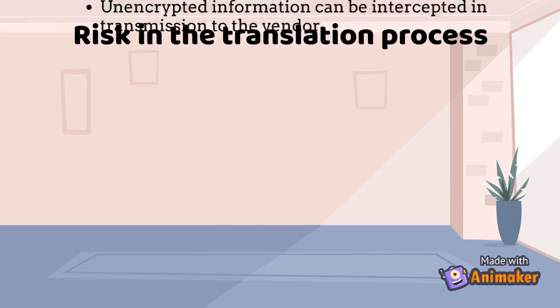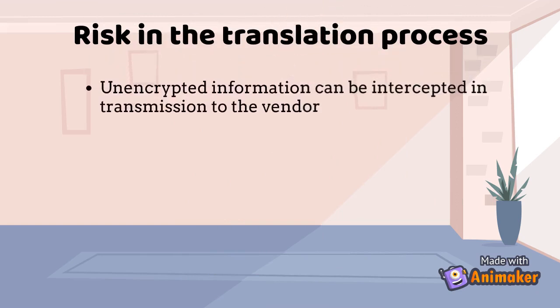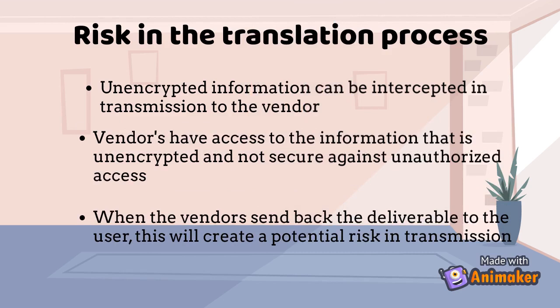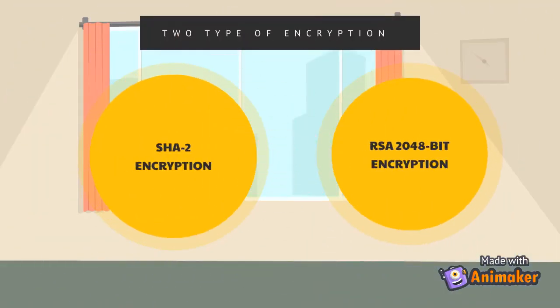There are risks in the translation process. Number one: unencrypted information can be intercepted in transmission to the vendor. Number two: vendors have access to information that is unencrypted and not secure against unauthorized access. Number three: when the vendors send back the deliverable to the user, this creates a potential risk in transmission. The encryption that is used is SHA-2 encryption.